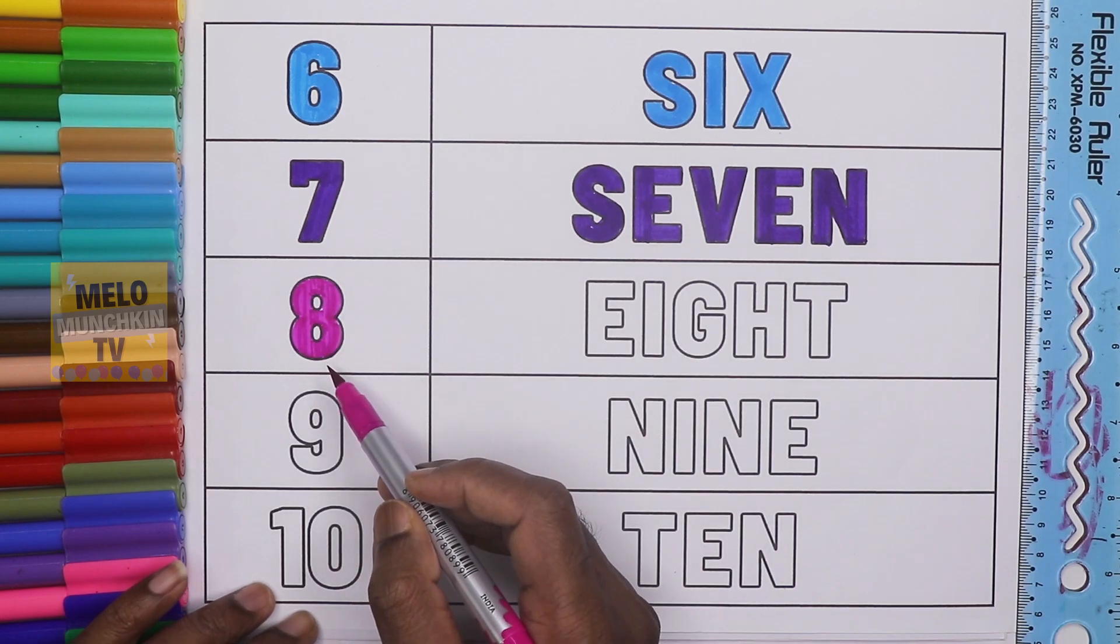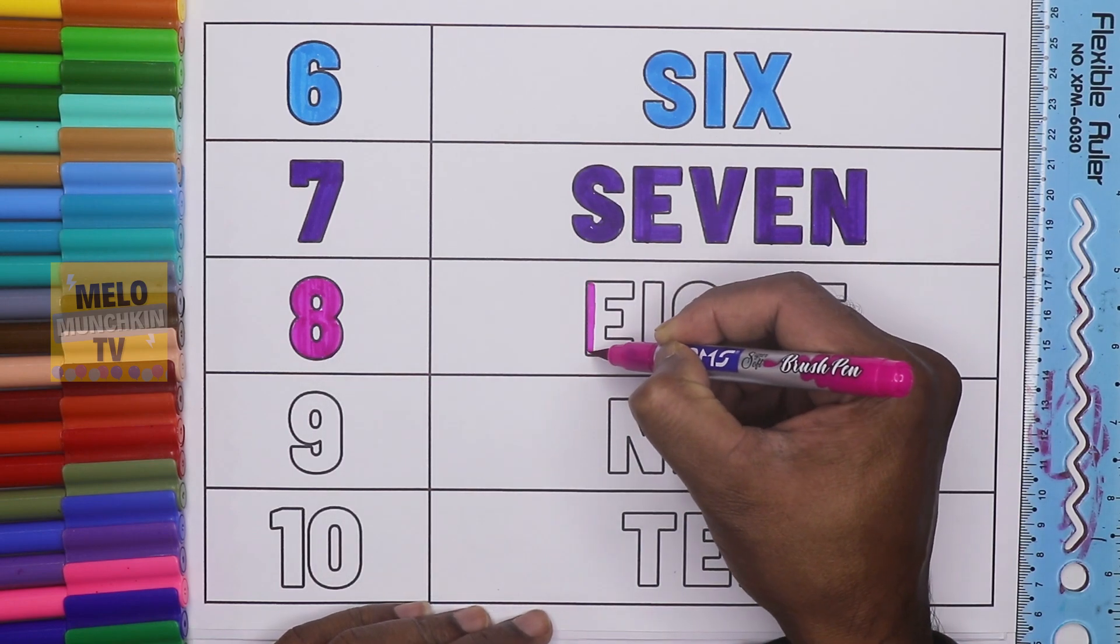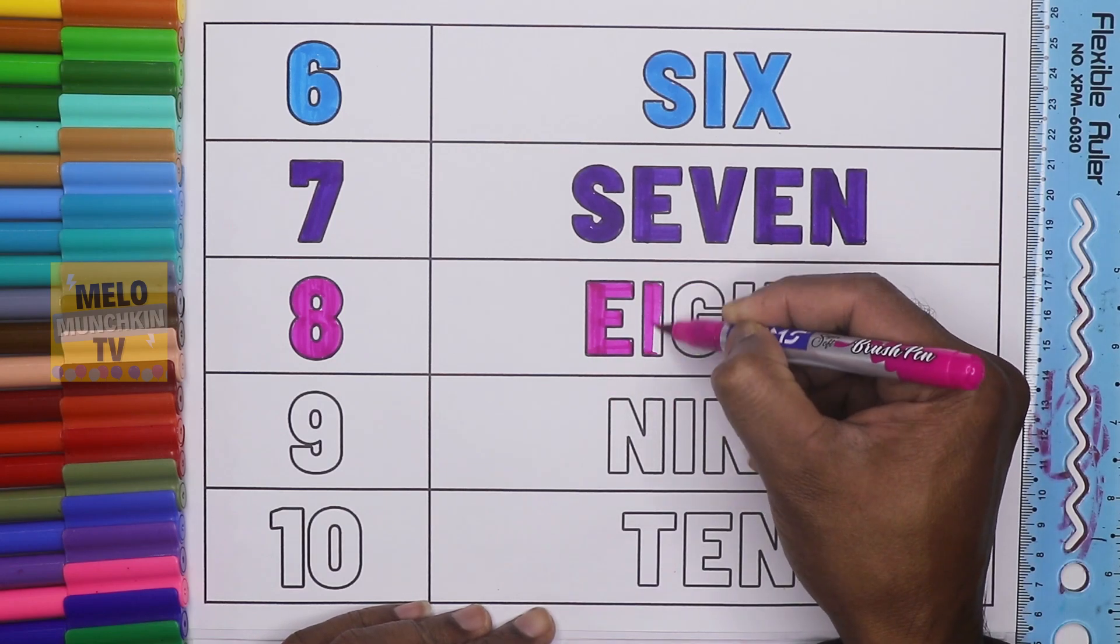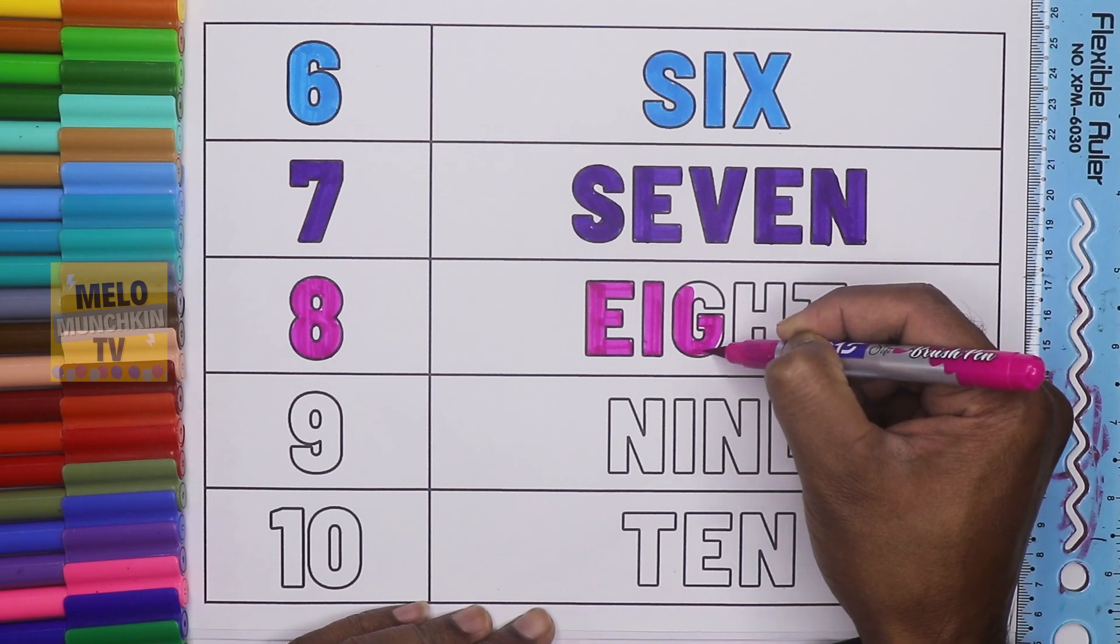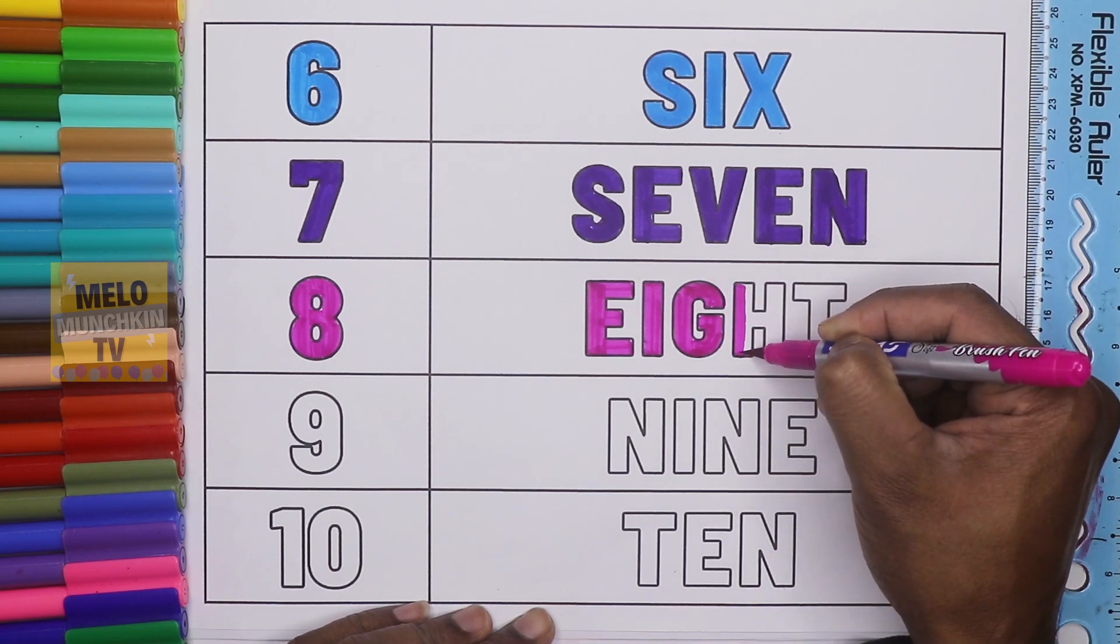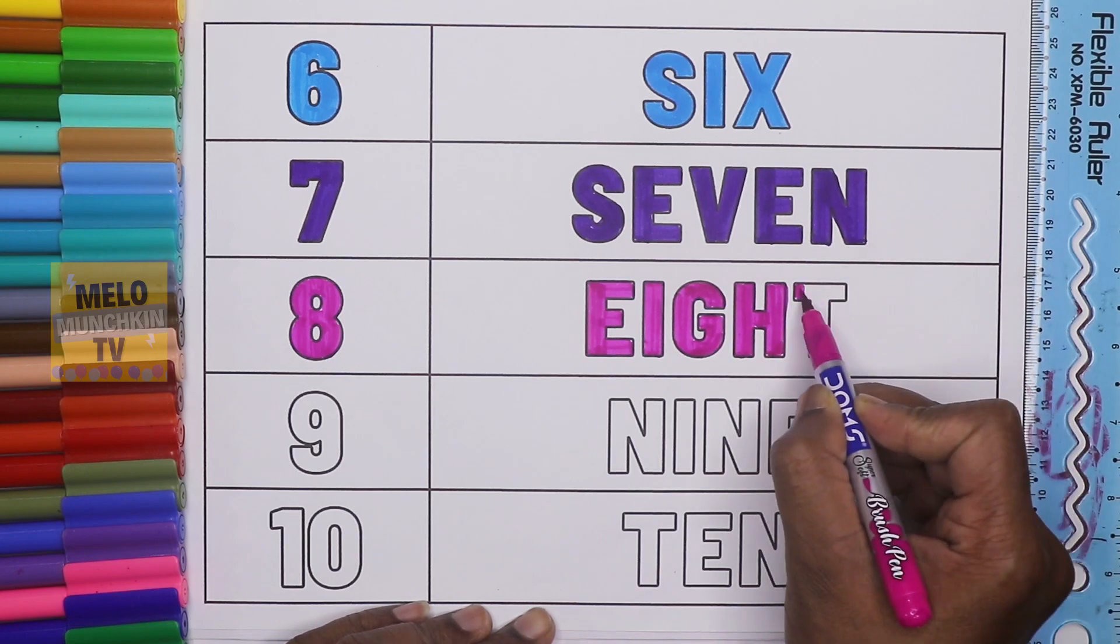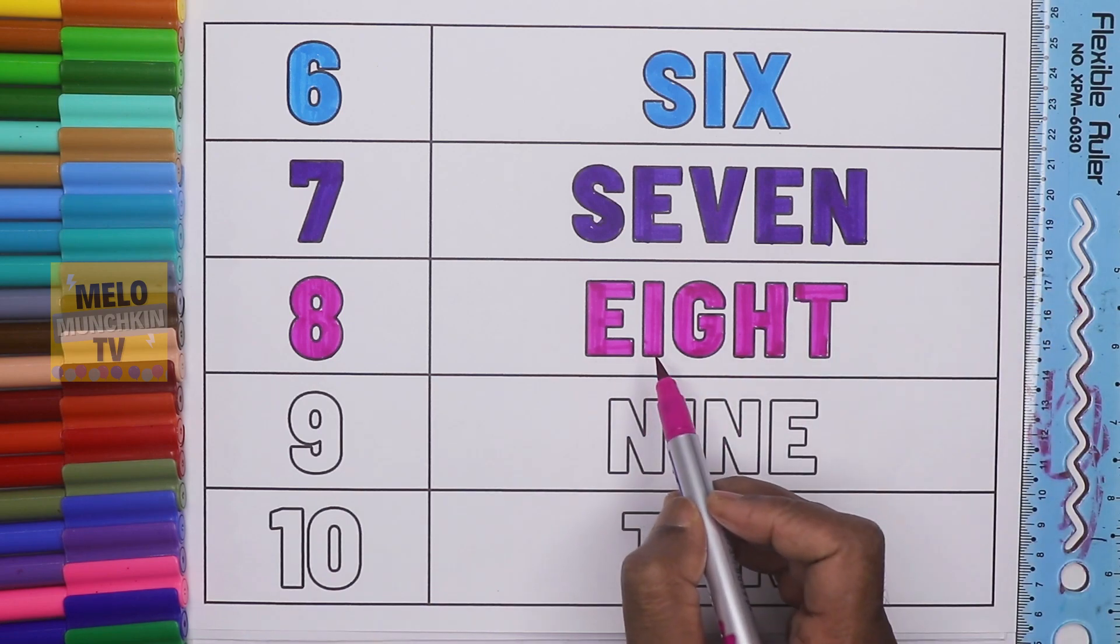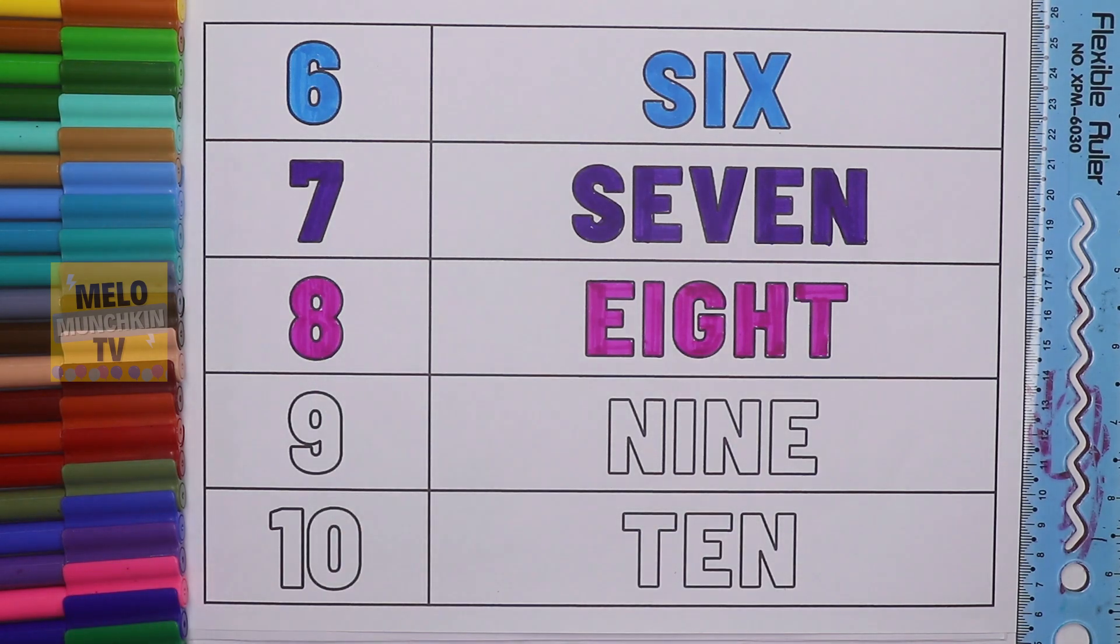So this is number 8. So let's see what is the spelling of number 8. E-I-G-H-T. 8. Let's repeat the spelling. E-I-G-H-T. 8.